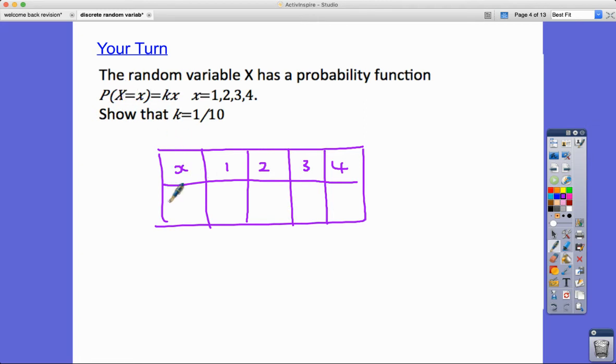It's saying probability that my discrete random variable is a particular value of x is kx. So k times one is k. Two times k is 2k. Three, if I put three in here, 3k. And 4k. Now, my job, just like before, is to show that k is equal to one-tenth in this case.